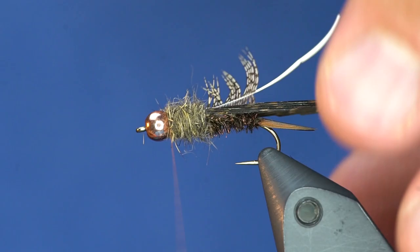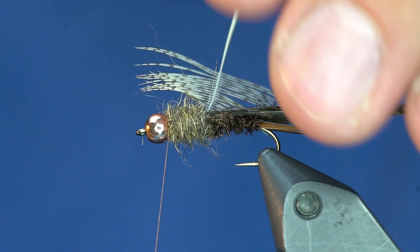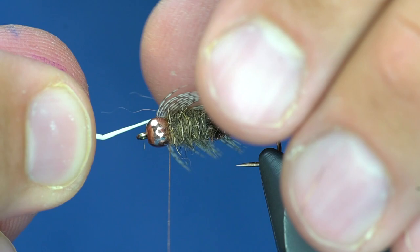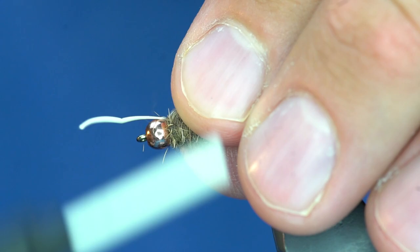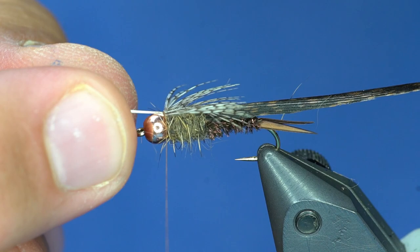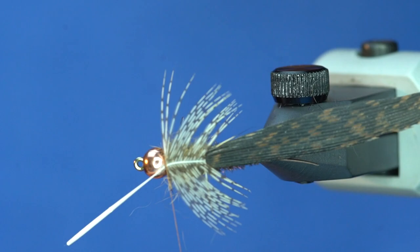And then I'm going to take this partridge feather and just pull it. Make sure I'm not trapping fibers. But just pull that over the top of the thorax. And tie this off. So you can see that the stem's kind of wanting to kick over. I'm just going to grab that and pull it straight. So you can see I've got nice looking stone fly legs on either side. And don't worry about durability because the wing case is going to go right over the top of that feather and protect it all.